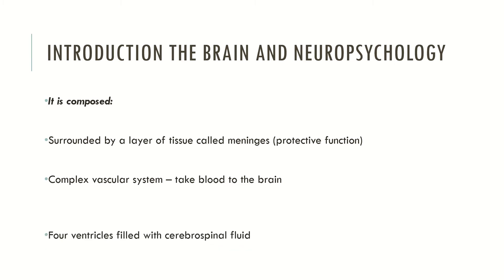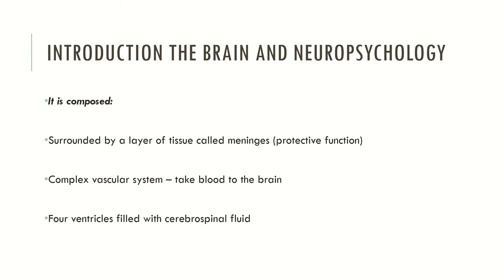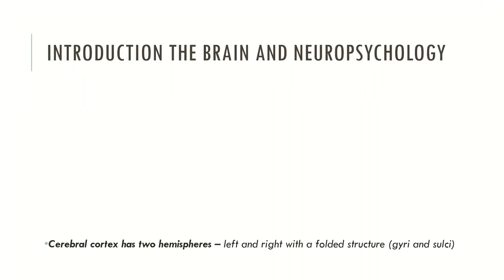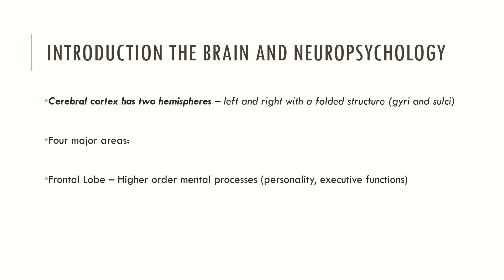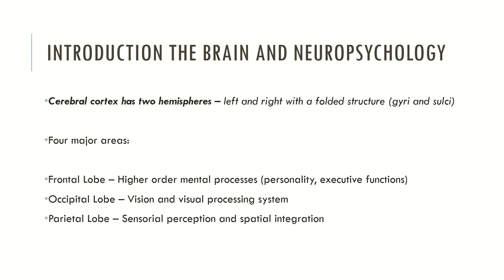The brain also has four major ventricles which are filled with cerebral spinal fluid. The cerebral spinal fluid is very important in keeping the brain healthy by removing dead nerve cells. Now let's see the cerebral cortex. The cerebral cortex has two hemispheres, left and right, and these hemispheres have a folded structure which are called gyri and sulci. The cerebral cortex is divided into four major areas. The frontal lobes, which are responsible mainly for higher order mental processes such as personality and executive functions. The occipital lobes, which are concerned with vision and visual processing. The parietal lobe, which is concerned with sensory perception and spatial integration. And the temporal lobe, which is mainly responsible for memory, language skills and emotional processing.